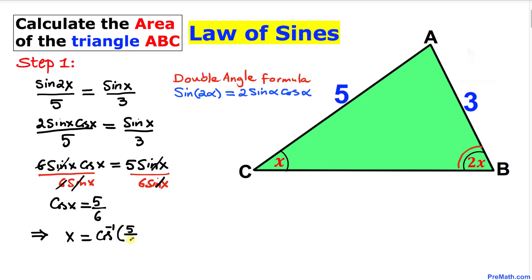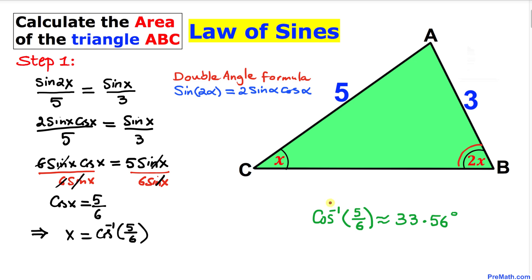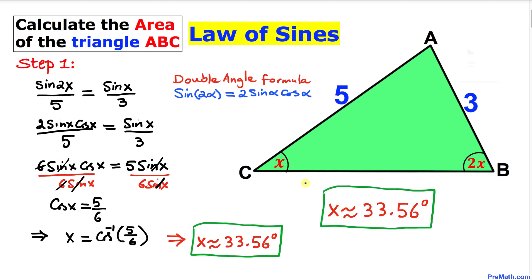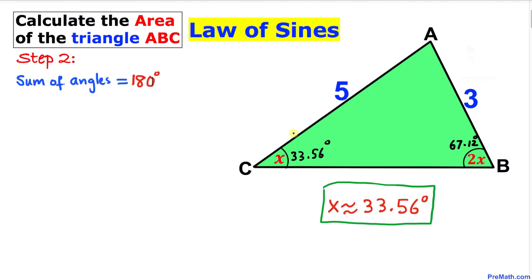We can now take the inverse cosine: x equals cosine⁻¹(5/6). Using a calculator, cosine⁻¹(5/6) is approximately 33.56 degrees. So angle C is approximately 33.56 degrees, and angle B, which is twice angle C, is 2 × 33.56 = 67.12 degrees.